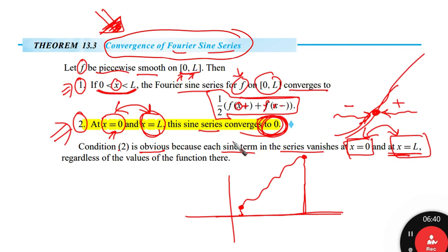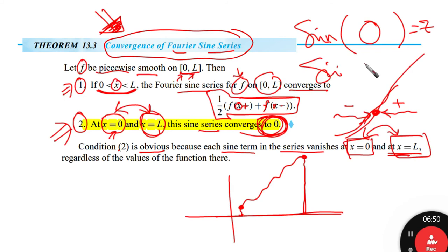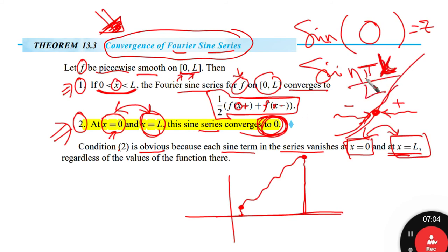At x equal to 0 and x equal to L, all the sine terms equal 0. Sine(0) equals 0, and sine(n pi) for any integer n also equals 0. So substituting x equal to L gives sine(n pi x over L) equal to 0 at the endpoint.